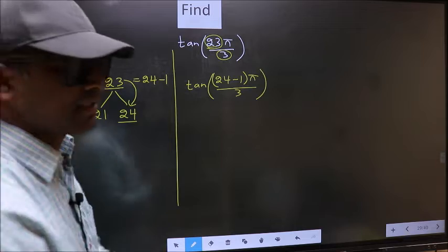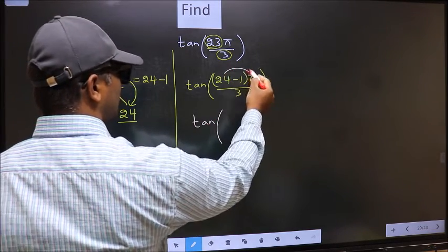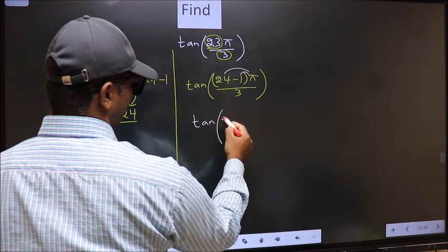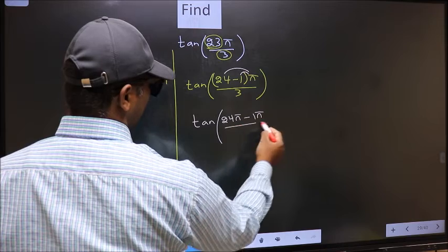Next, for tan, you should open the brackets. We get 24π minus 1π by 3.